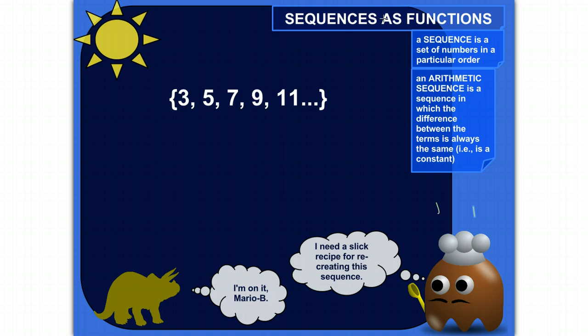And an arithmetic sequence is a sequence in which the difference between the terms is always the same. So for example, if I go from 3 to 5, that's a difference of 2. If I go from 5 to 7, that's a difference of 2, 7 to 9, 2, 9 to 11, take a wild guess, exactly, 2. So that's an arithmetic sequence.